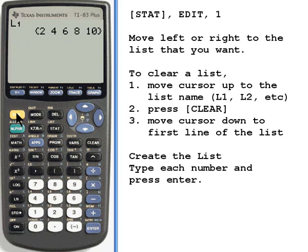The same thing would happen for the second list. I'll press 2nd, and then 2 for L2. Press enter, and there's the second list we created.